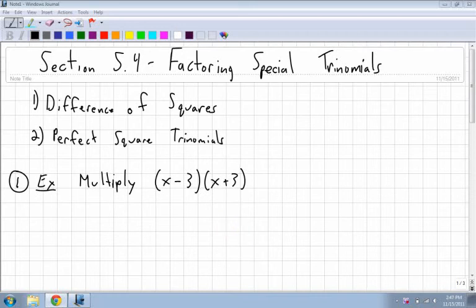All right, this is the last section for chapter 5, section 5.4, and this is factoring special trinomials. So there's two different ones here. The first one is what they're called difference of squares. Those are the first ones we're going to look at, and what they usually do is they have what's called a perfect square.